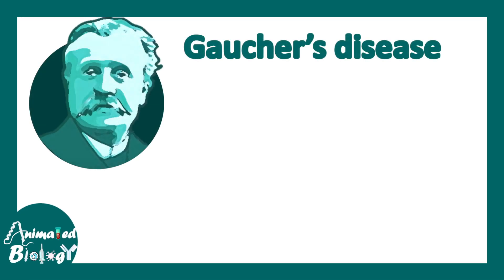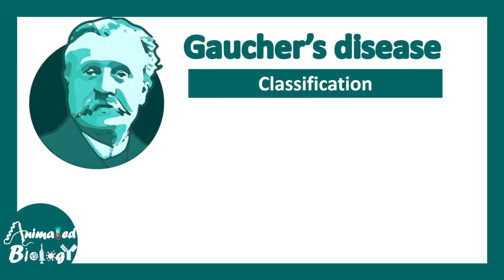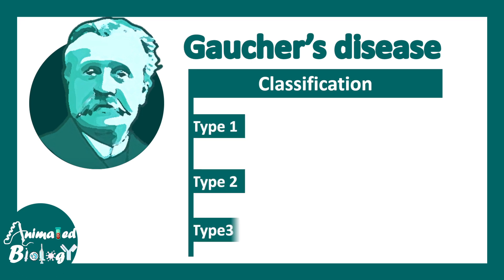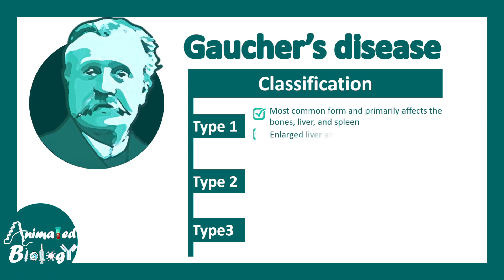Gaucher disease can be classified into type 1, type 2, and type 3. Type 1 is the most common form and it primarily affects the bones, liver, and the spleen.